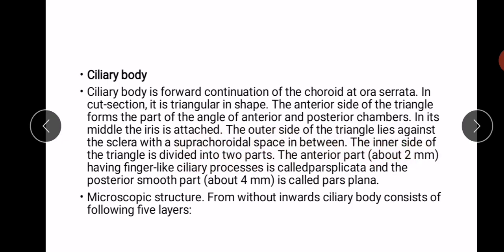The inner side of the triangle is divided into two parts. The anterior part, about two millimeters, has finger-like ciliary processes and is called pars plicata — a high-yield point. The posterior smooth part, about four millimeters, is called pars plana.